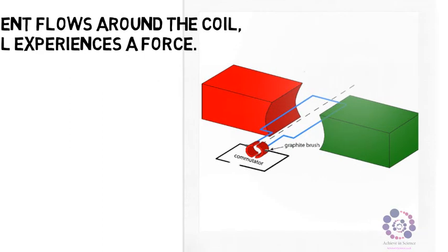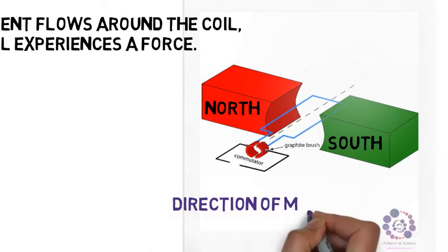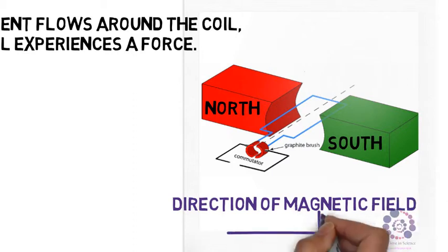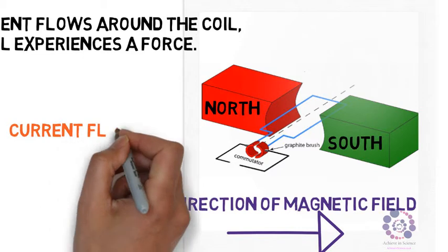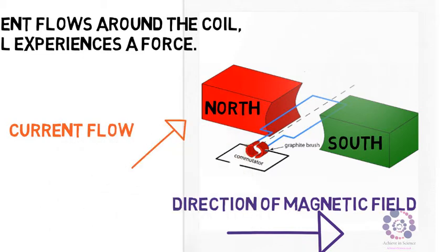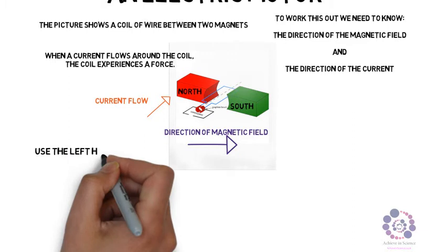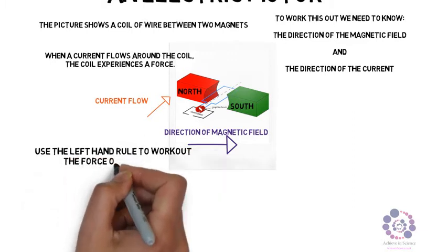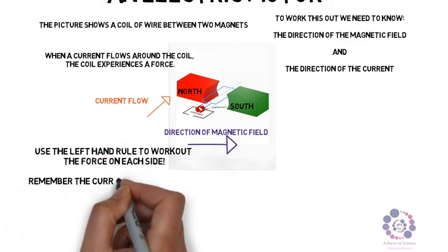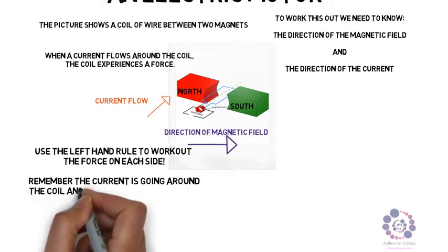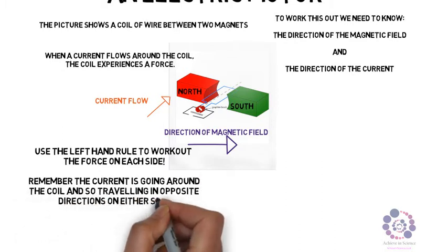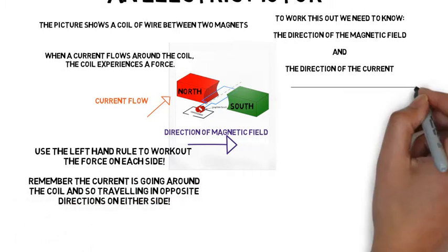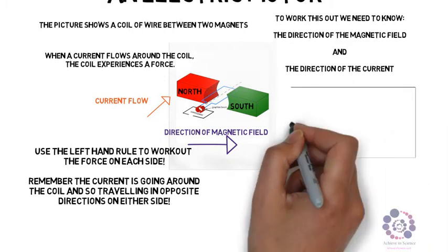So let's go back to the diagram. Here the red stands for the north pole and the green stands for the south. Therefore, the direction of the magnetic field is to the right. The current is flowing into the coil. Now using the left hand rule, you can work out the force on each side. Remember the current is going around the coil and therefore travelling in opposite directions on either side, so going into the motor on one side and coming out of the motor on the other.